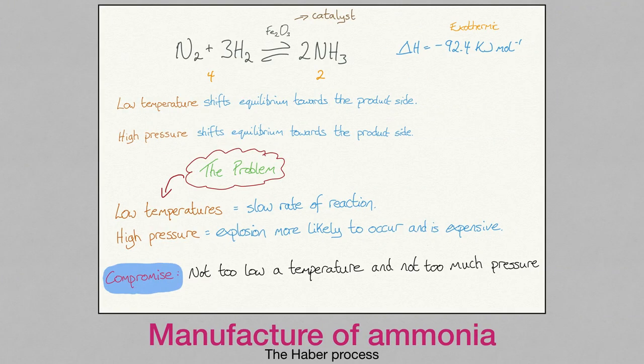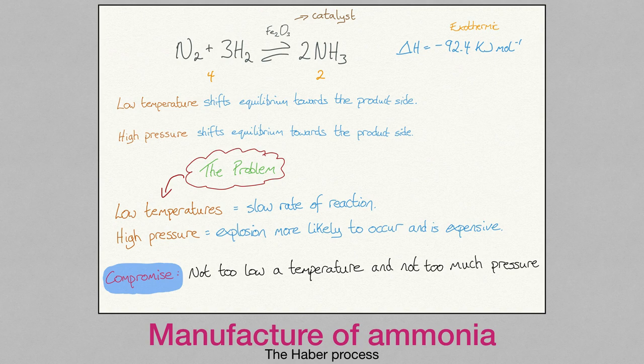The manufacture of ammonia is a process that depends heavily on chemical equilibrium. Ammonia is used in fertilisers, explosives and cleaning detergents. The manufacture of ammonia is known as the Haber process. We have the overall chemical reaction equation and must ensure that ammonia is produced in large quantities. The reaction is exothermic, therefore low temperature would favour the product side. Likewise, high pressure will drive the reaction towards the product side too. But there is a slight problem with applying these two stresses.